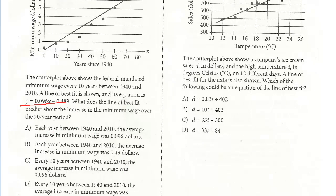Let's look at the choices. Each year between 1940 and 2010, the average increase in the minimum wage was 0.096. So if you look, the x-axis is each year. This is the x and the minimum wage. And we have between 1940 and 2010. We're given the slope as 0.096. We've talked about this before. Anytime you have a linear equation in slope-intercept form, every time the x goes up by 1, the y will increase by the slope. And A looks good, doesn't it? Because each year, that's every x.